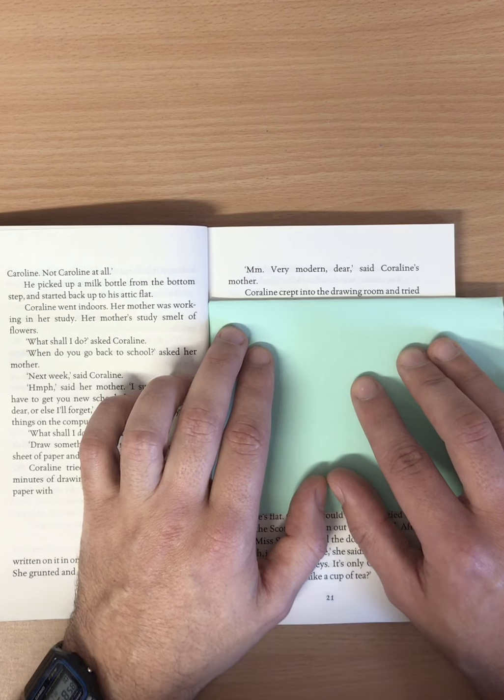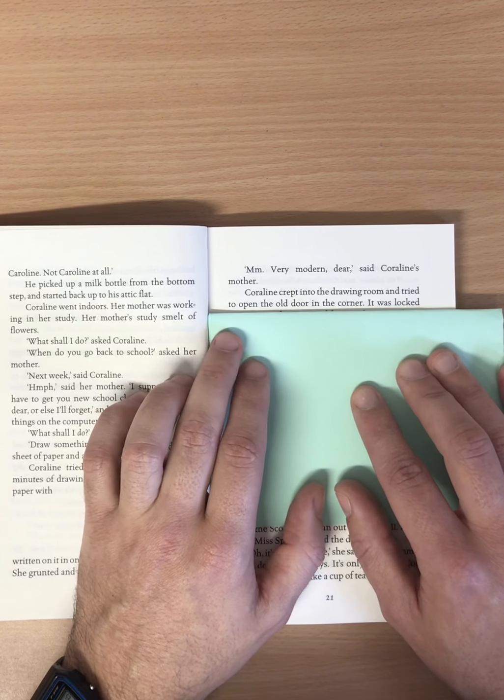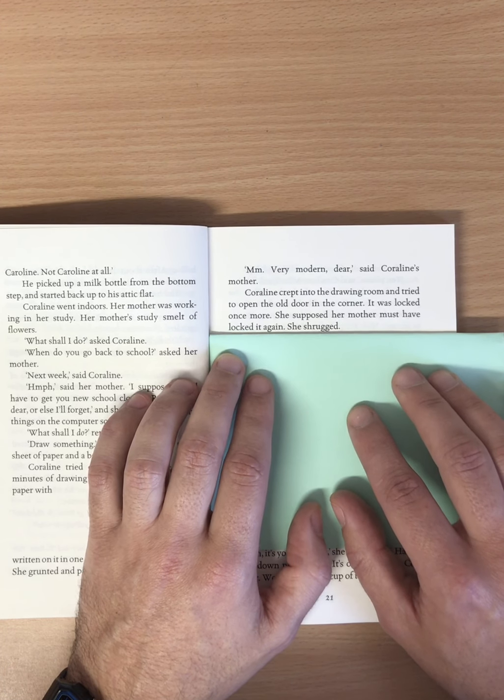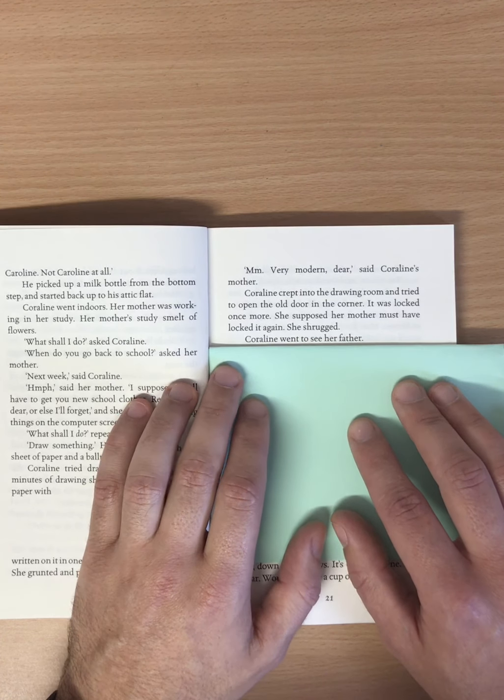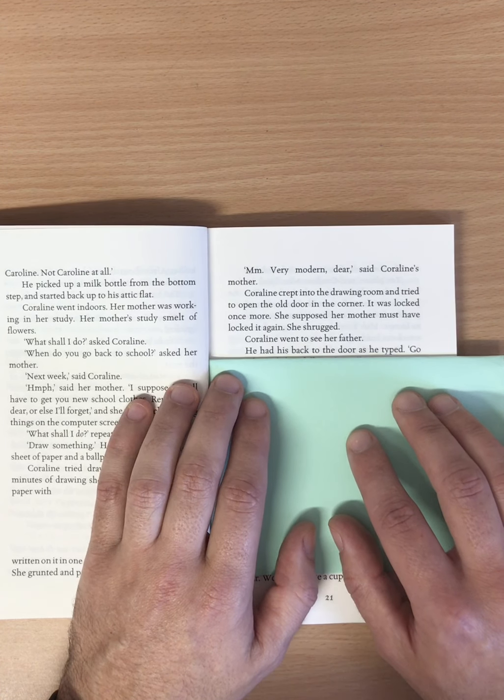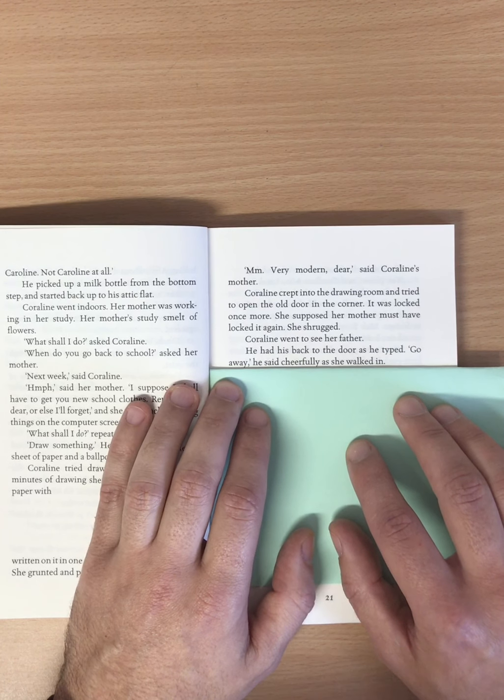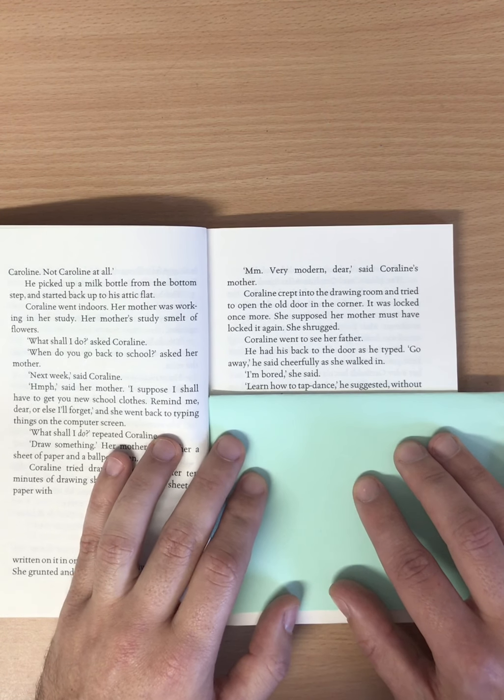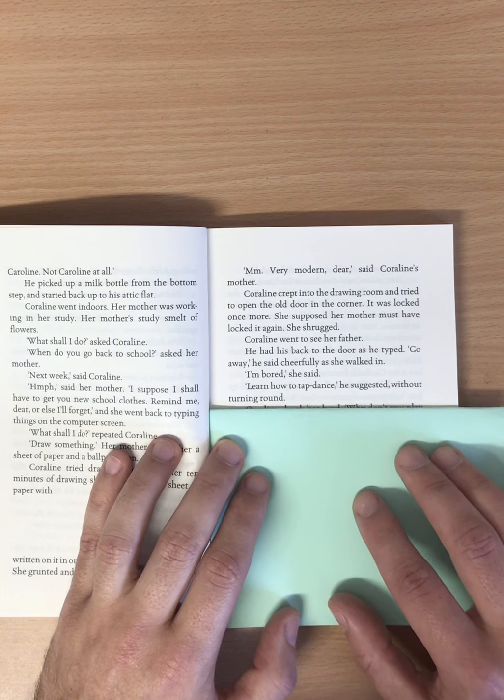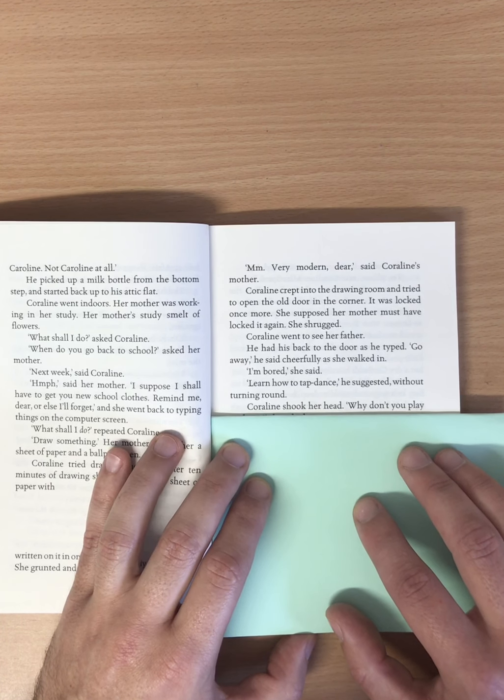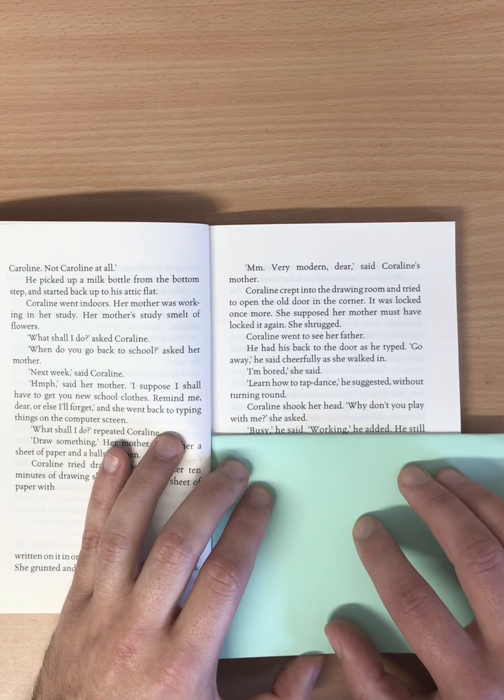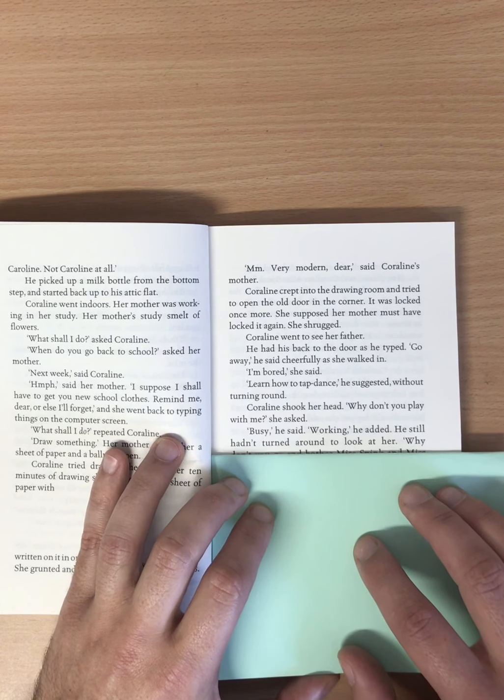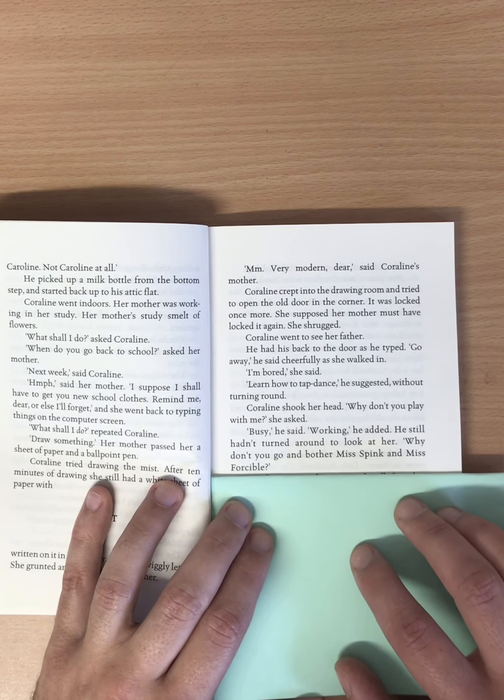Coraline crept into the drawing room and tried to open the old door in the corner. It was locked once more. She supposed her mother must have locked it again. She shrugged. Coraline went to see her father. He had his back to the door as he typed. Go away! he said cheerfully as she walked in. I'm bored! she said. Learn how to tap dance, he suggested without turning round. Coraline shook her head. Why don't you play with me? she asked. Busy, he said. Working, he added. He still hadn't turned round to look at her. Why don't you go and bother Miss Spink and Miss Forcible?